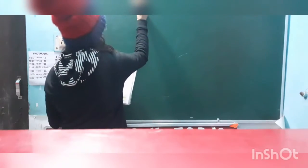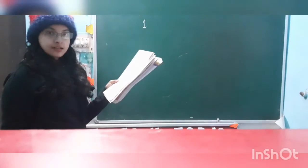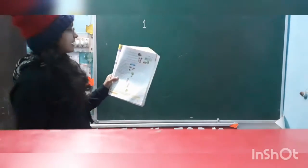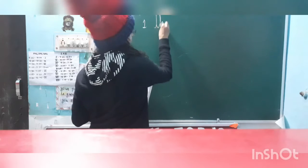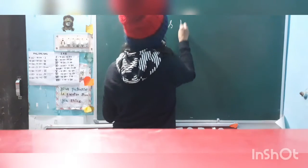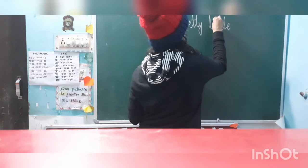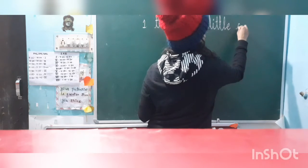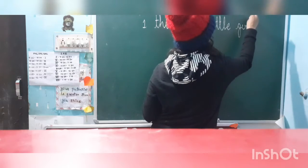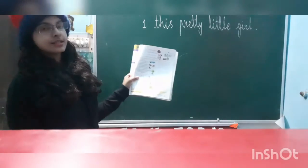Exercise C, first one: 'These pretty little girls.' We have to change 'these' to 'this.' Pretty and little will remain the same, and we will change 'girls' into 'girl.' So the answer is: This pretty little girl.